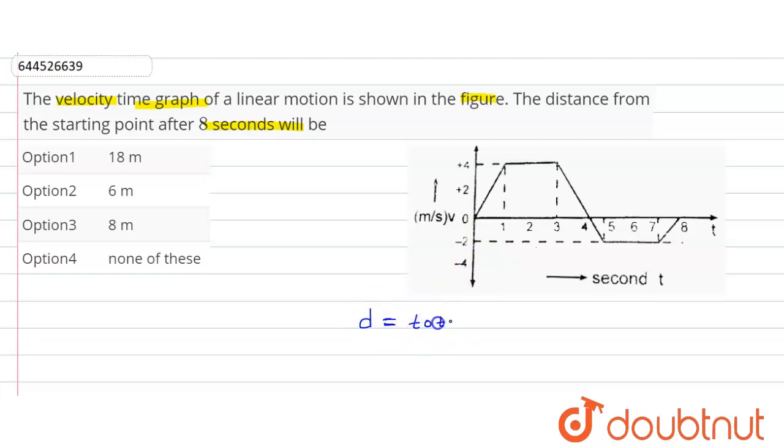Distance d is equal to how much? Distance d is equal to total area under the v-t curve.